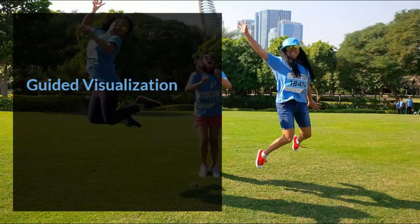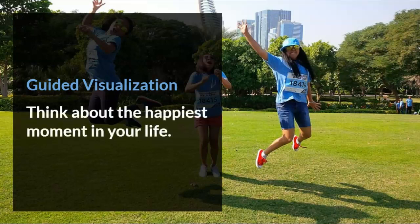Now, I would like for you to relax and close your eyes. I want you to think about the happiest moment in your life. Picture the location of this happiest moment. What do you smell? What do you hear? How are you reacting during this happiest moment? Picture the people who are with you. What are they wearing? What are you wearing? What were you thinking during this happiest moment? I want you to sit with this moment. When you are ready, please open your eyes.